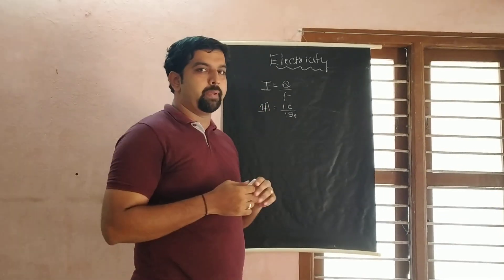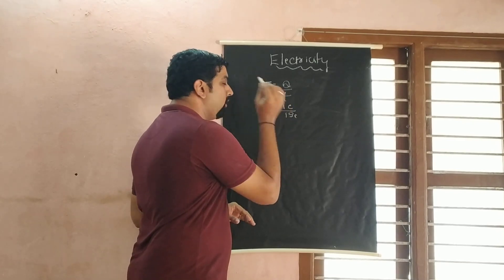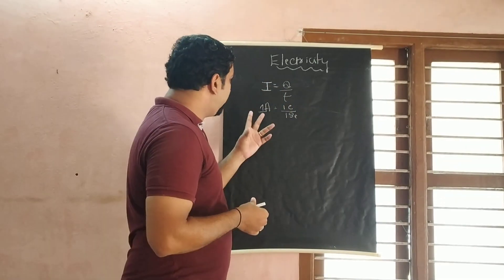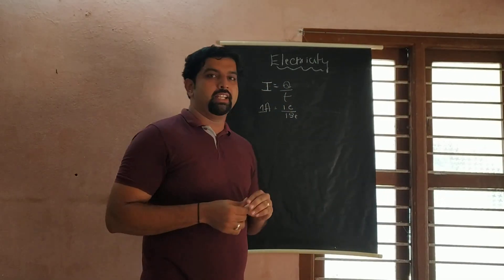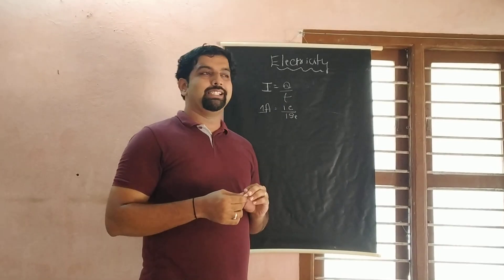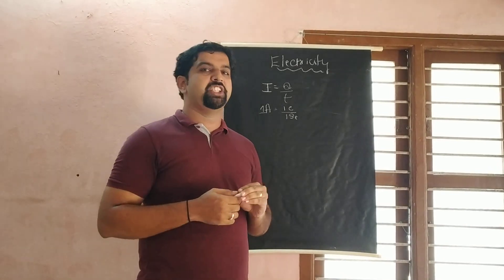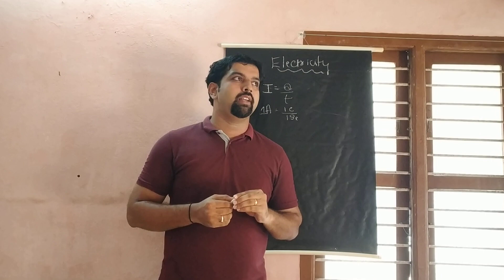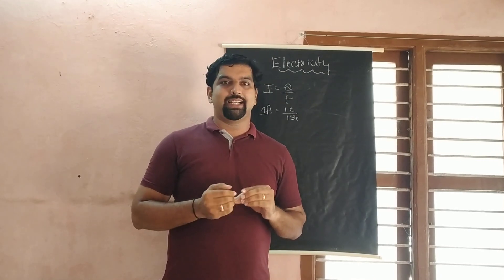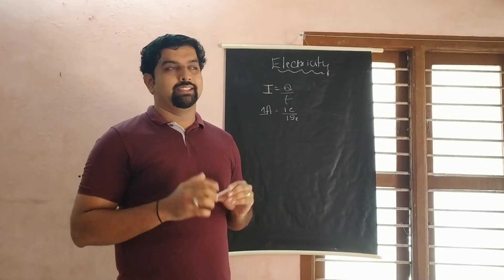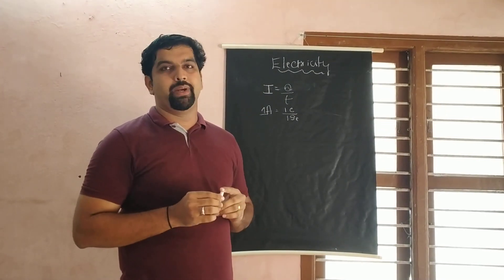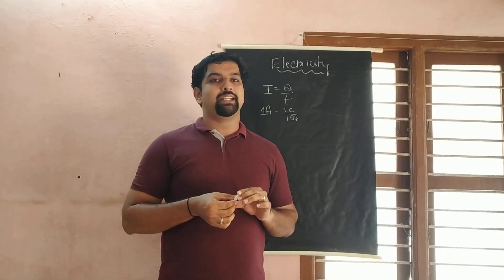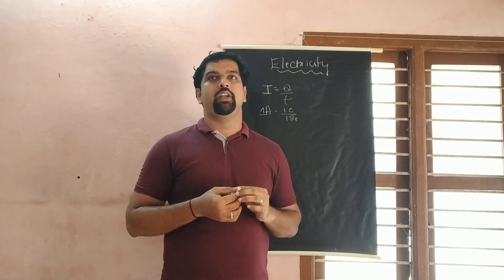To define: 1 ampere is 1 coulomb of charge flowing in 1 second. The instrument used to measure electric current is the ammeter.